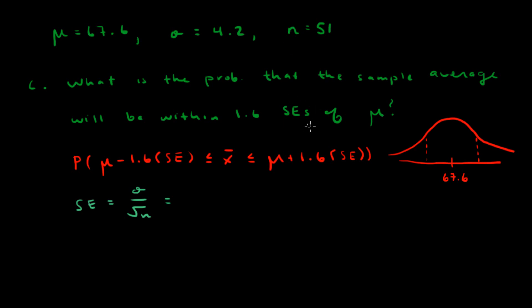The first thing we're going to do is calculate the standard error using this standard error formula. Note that there are two different formulas for the standard error, and this is the one we want to use for this problem. We're just going to plug in 4.2 for sigma, 51 for n, so 4.2 over root 51, and this gives you 0.588.